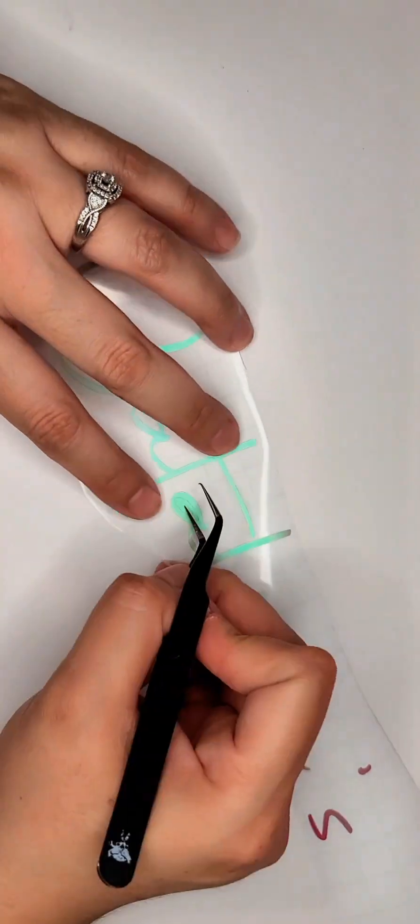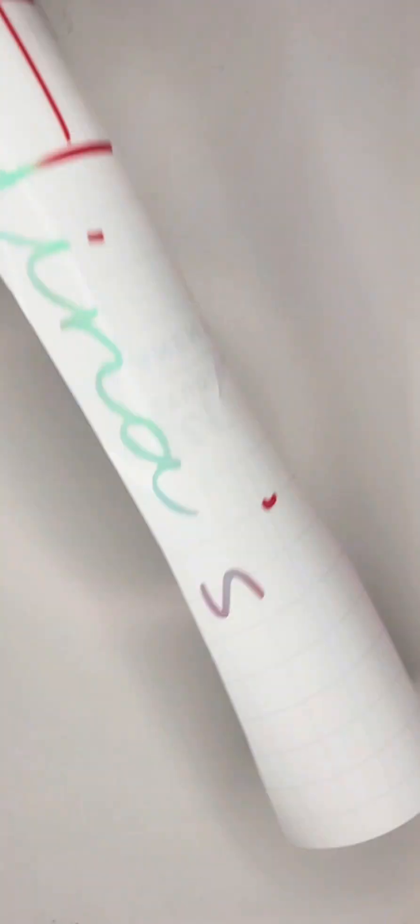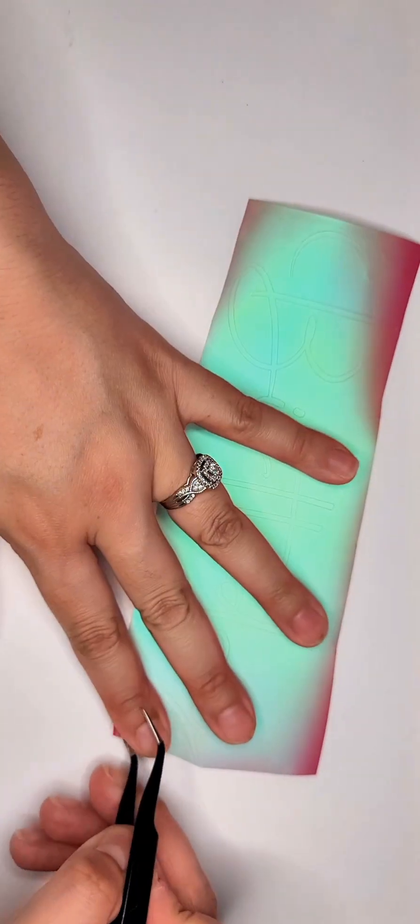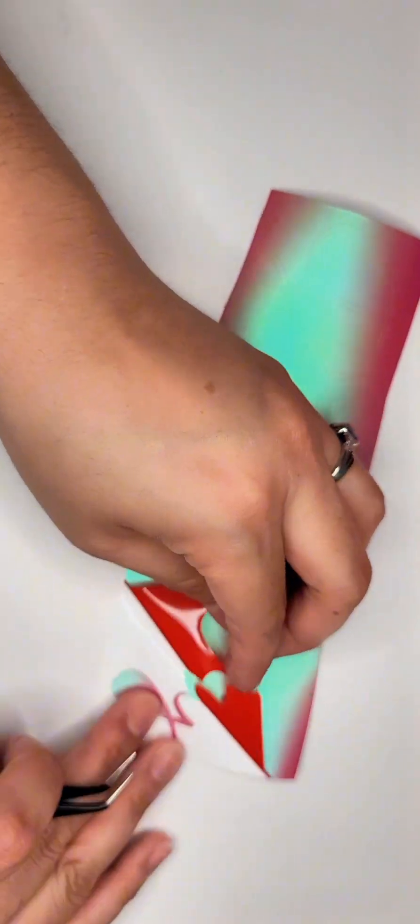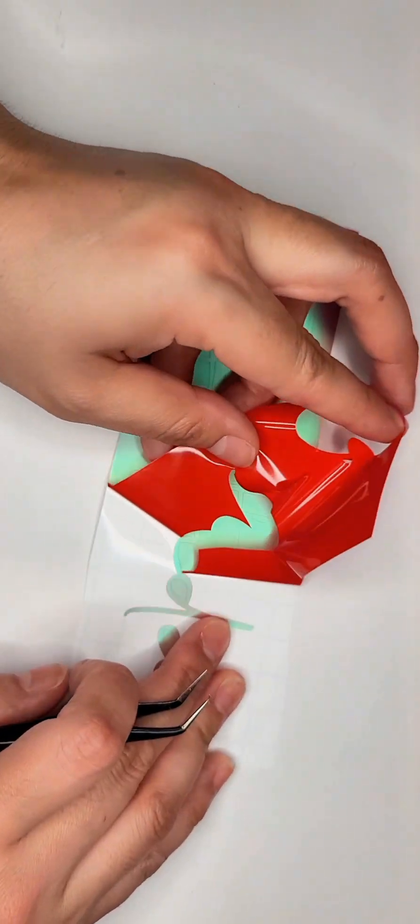I love the holographic look of this vinyl. Depending on which angle you look at the sign, the message can be in pink or in a beautiful turquoise color.